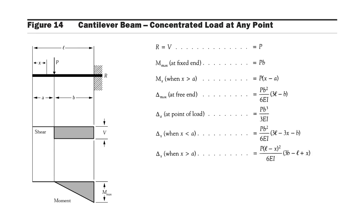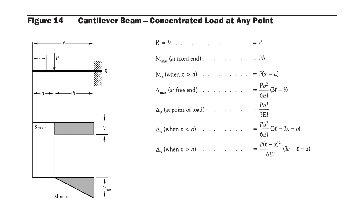Now we move to the next condition: a cantilever beam carries a concentrated load at any point — at a distance 'a' from the free end and distance 'b' from the fixed end. The maximum bending moment value is pb, occurring at the fixed end, and the maximum deflection at the free end is pb² / 6EI × (3l − b).